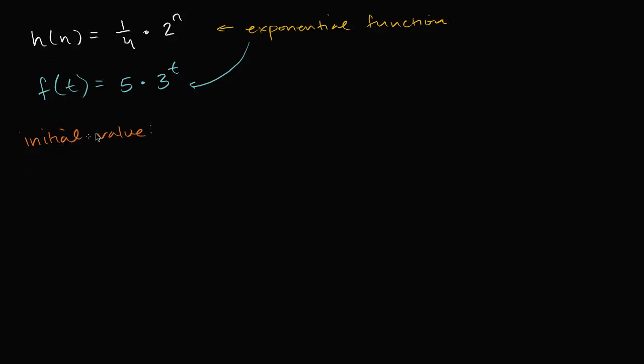So in these cases, the initial value for the function h is going to be h of zero. And when we evaluate that, that's going to be 1/4 times 2 to the zero. Well, 2 to the zero power is just one, so it's equal to 1/4. So the initial value, at least in this case, seemed to just be that number that sits out here. We have the initial value times some number to this exponent.